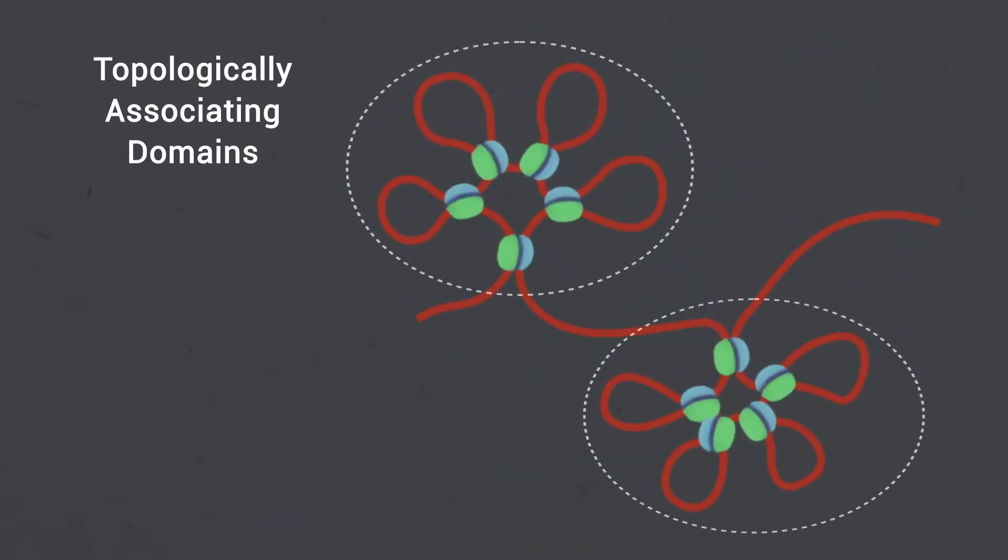They favor interactions between regulatory regions, whereas they disable promoter-enhancer looping contacts between regulatory regions separated by topologically associating domain boundaries.